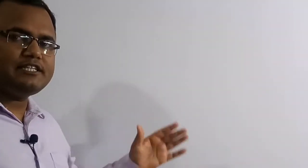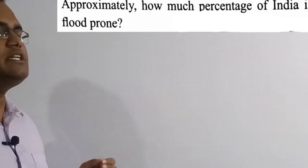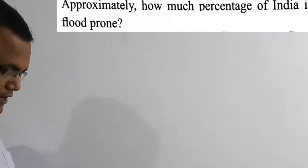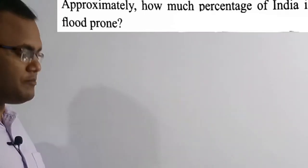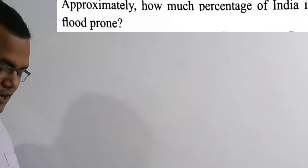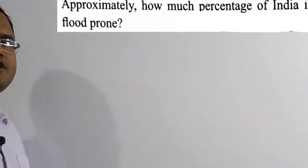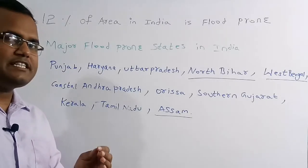Let's get started. We are going to solve the 36th question. Approximately how much percentage of India's land is prone to flood? Option A: 8%, Option B: 12%, Option C: 25%, Option D: 35%. Option B — 12% — is the correct solution.